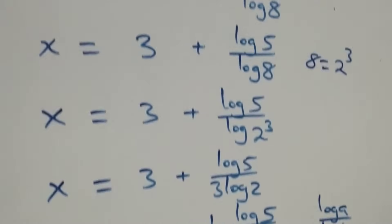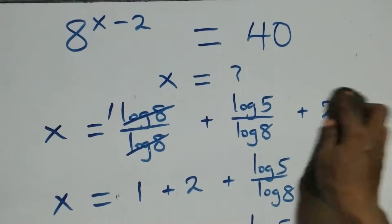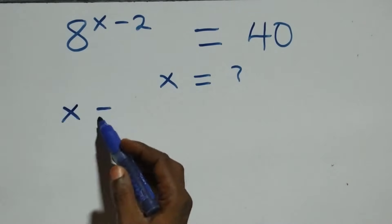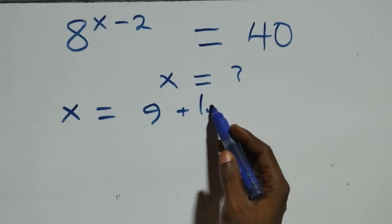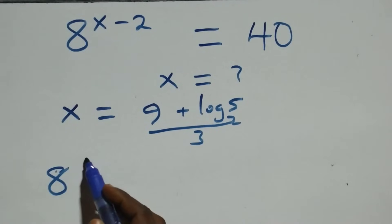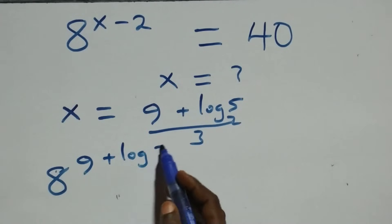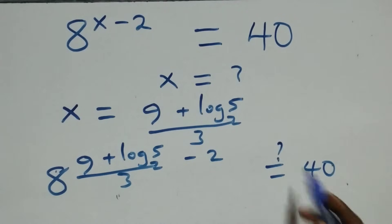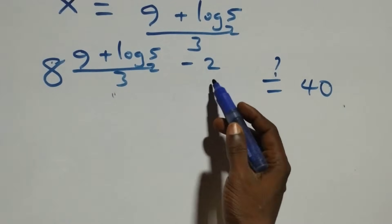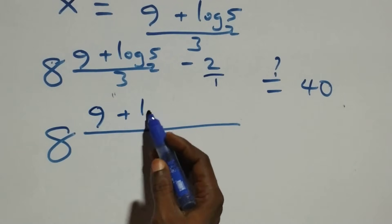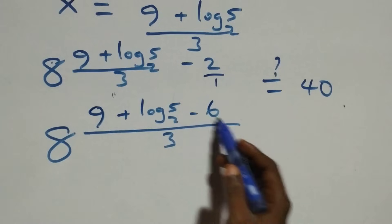Now let's verify this satisfies the original problem. We substitute x equals 9 plus log 5 base 2, all over 3, into 8 raised to power x minus 2. This gives 8 raised to power 9 plus log 5 base 2 all over 3, minus 2. Multiplying through, 3 times x minus 2 gives 9 plus log 5 base 2 minus 6.